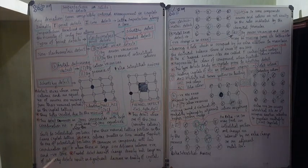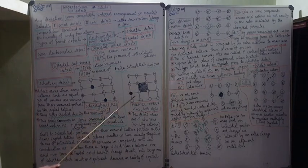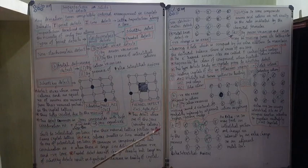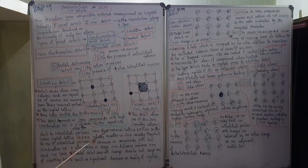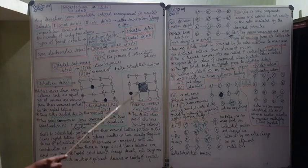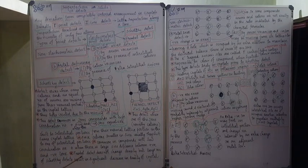Frenkel defect is common in compounds with a low coordination number, and when there is a large size difference between the positive and negative ions. In contrast, Schottky defect occurs in compounds with a high coordination number and when positive and negative ions are equal in size. These points form the key difference between Schottky and Frenkel defects.